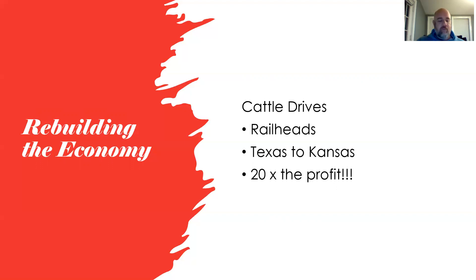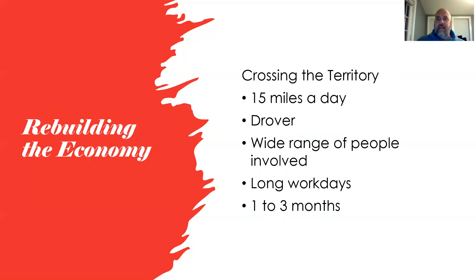For this time period, cattle drives were the method needed to maximize profit. Texas was especially known for its longhorn cattle. As cattle crossed the territory, they followed established trails. On a really good day a drive might cover 25 miles, but most days averaged about 15 miles.